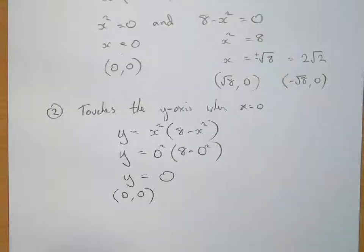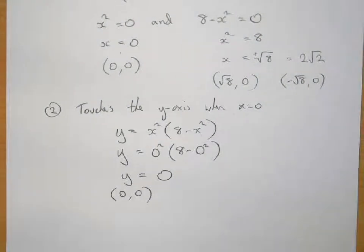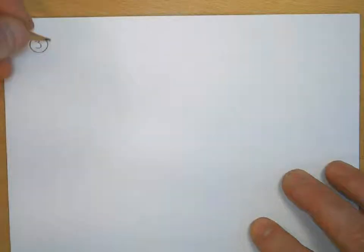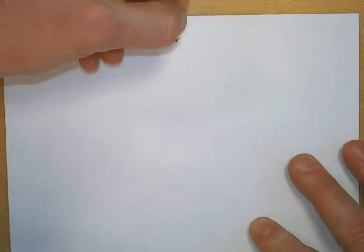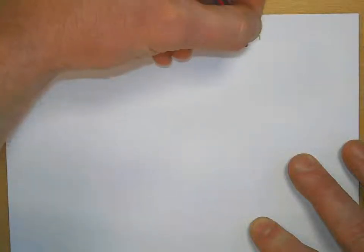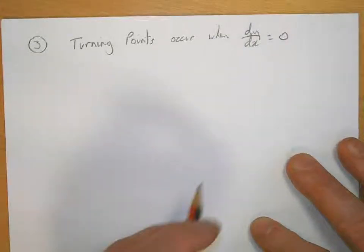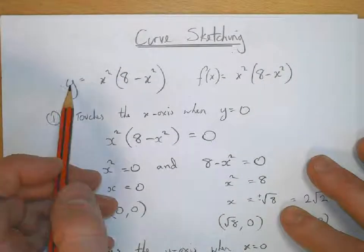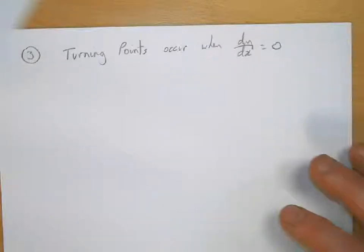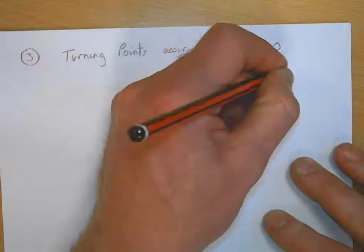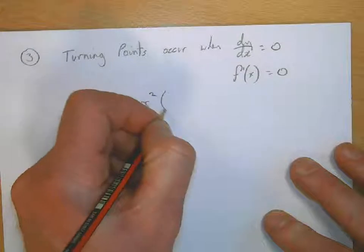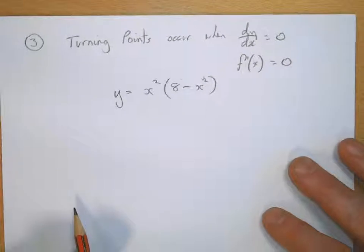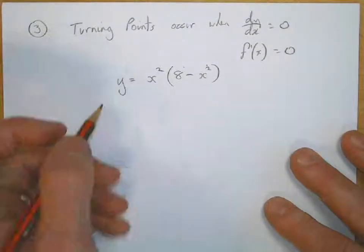The next step is to find the turning points. Turning points, or stationary points, occur when dy/dx equals 0. If you're using f of x notation, they occur when f'(x) equals 0. We've got to differentiate our function, which is x squared times (8 minus x squared). We cannot differentiate that yet — first we need to multiply out the brackets to get it ready for differentiation.